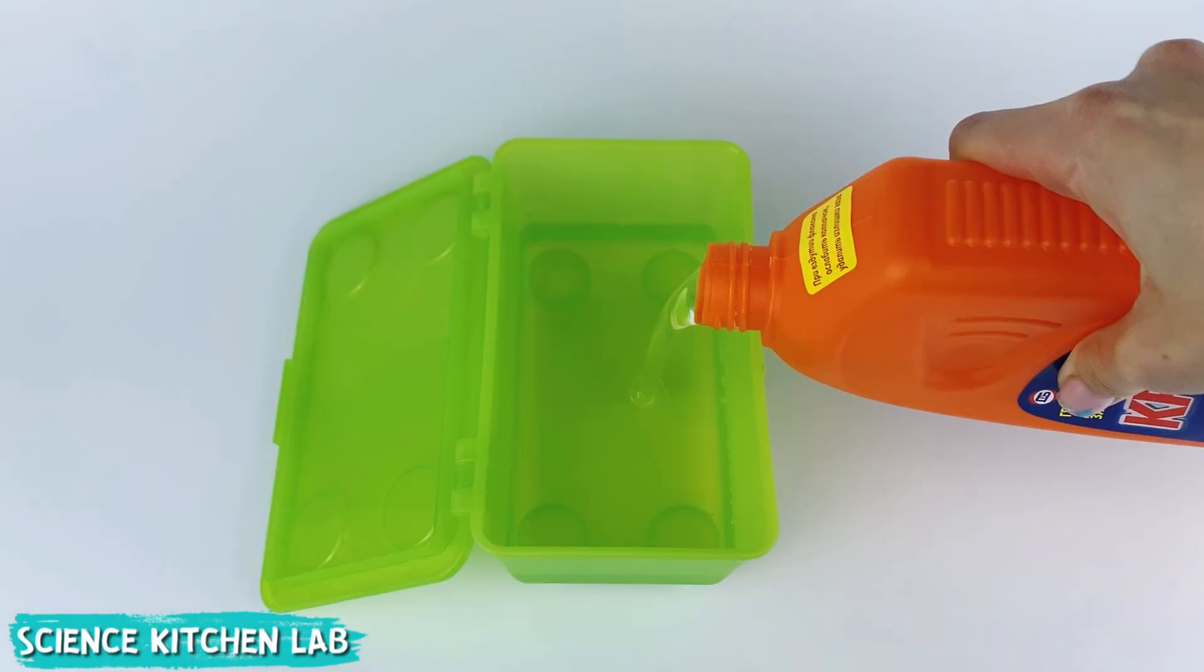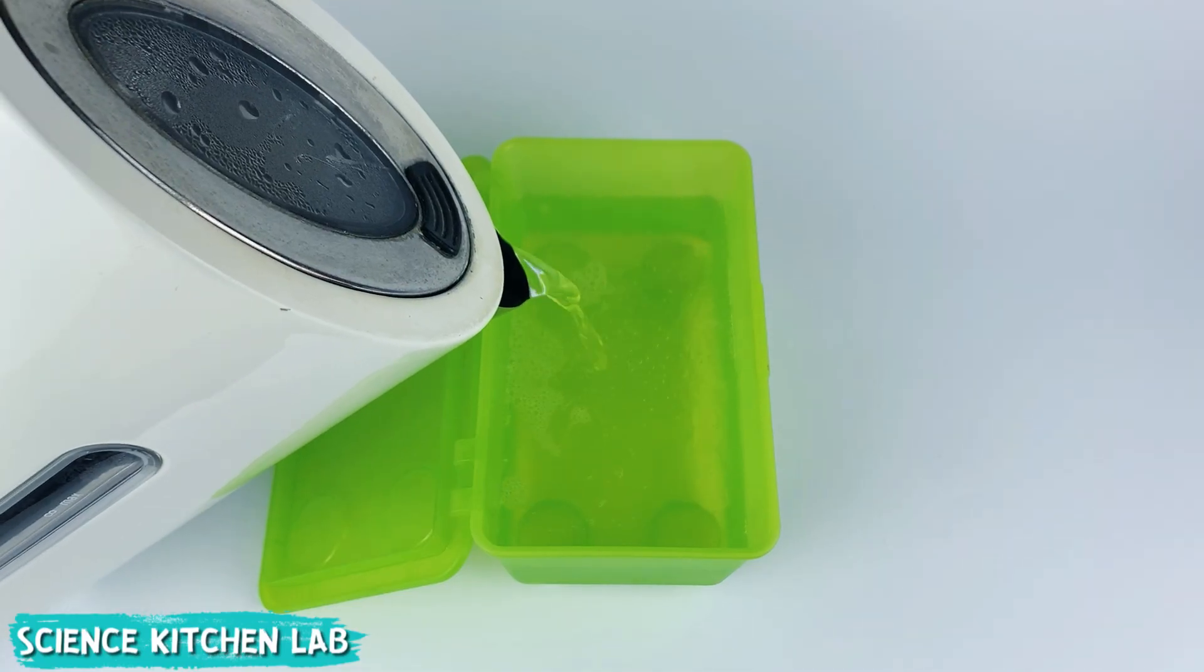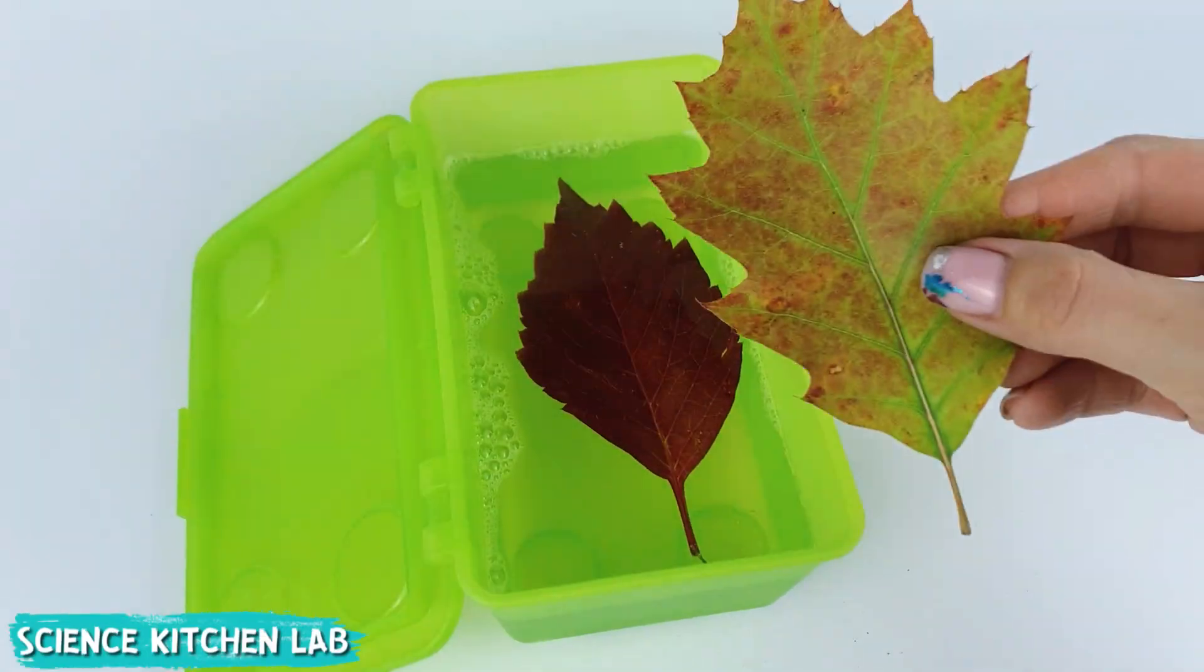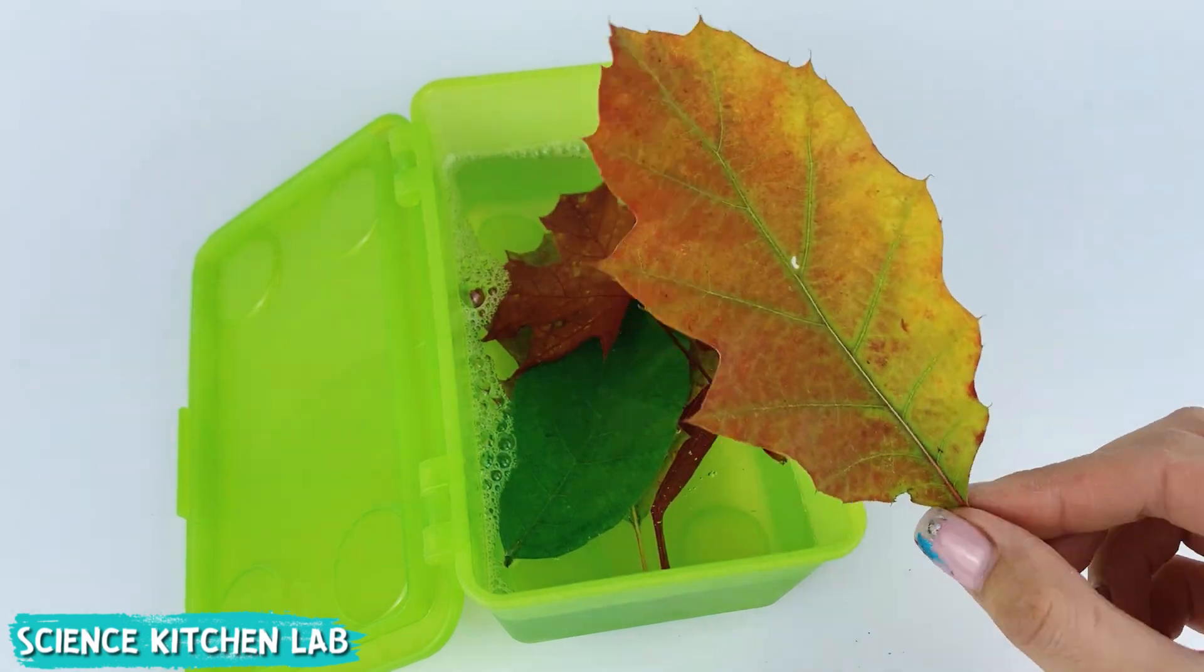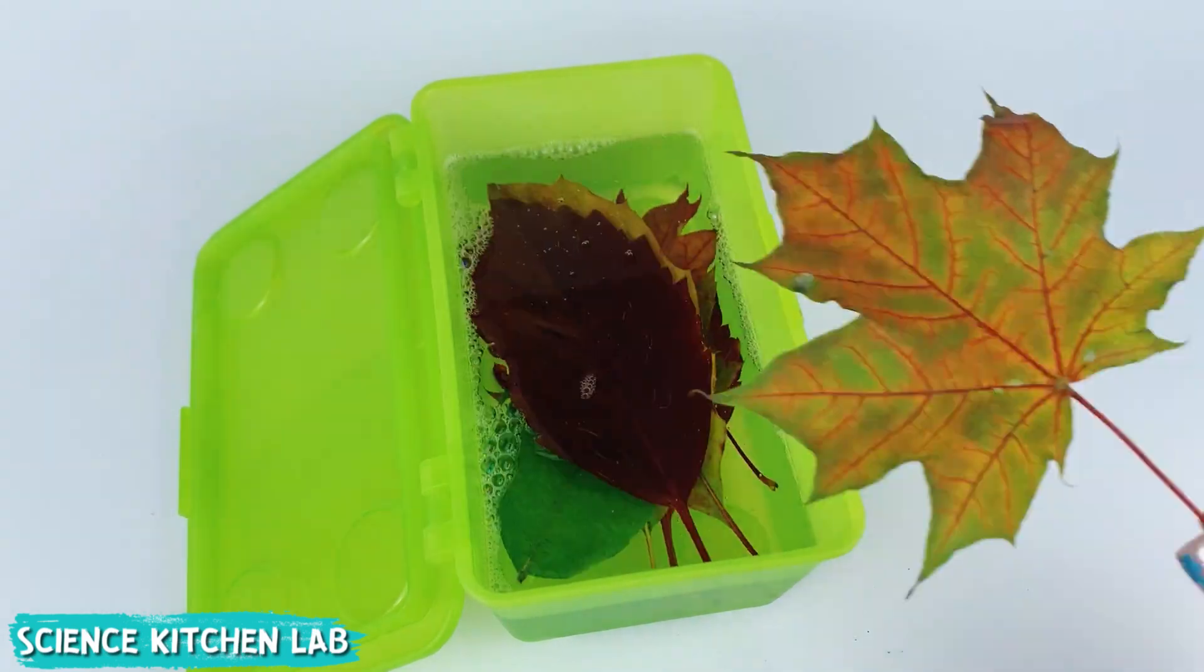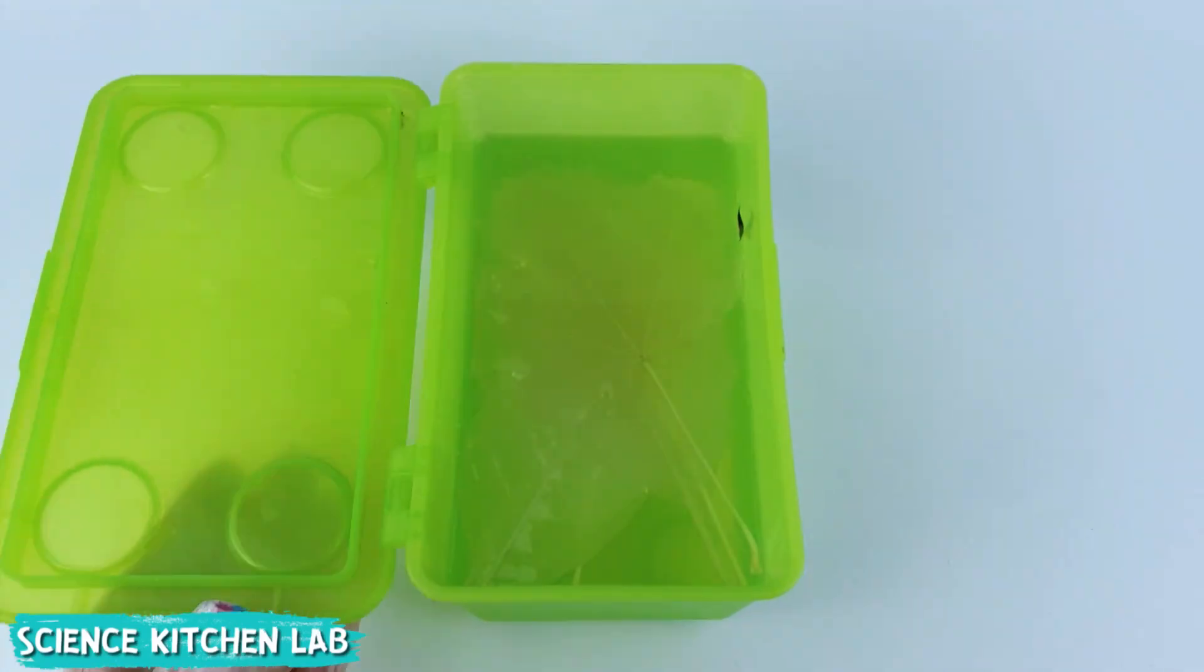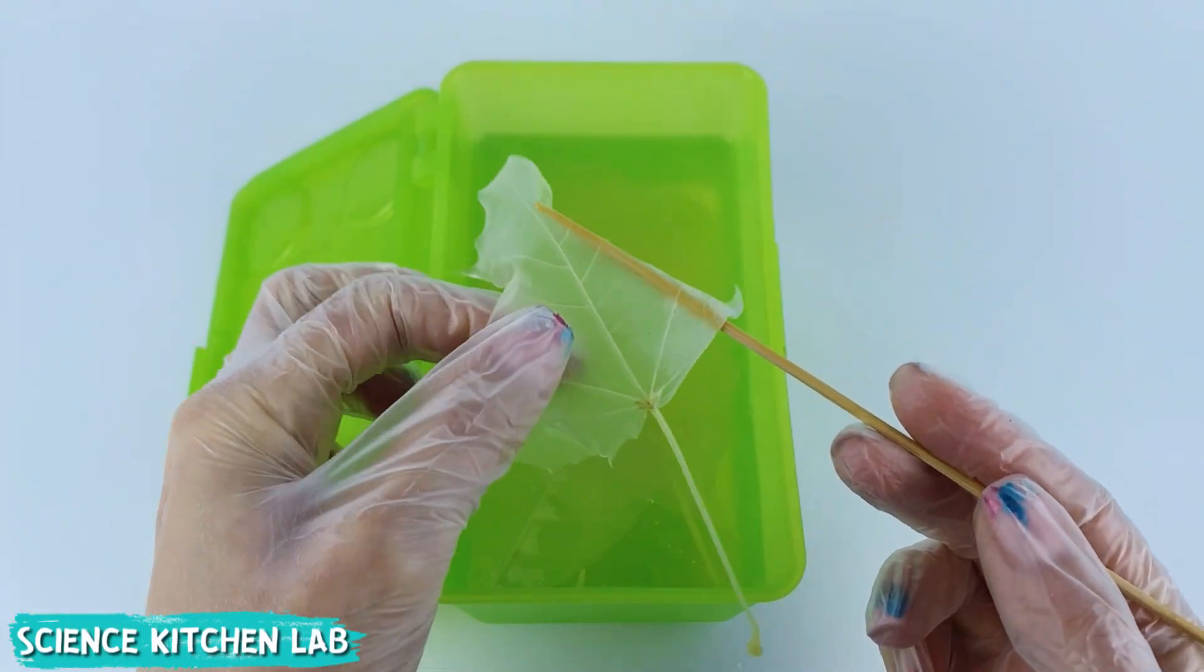Pour liquid drain cleaner and boiling water into a container in a one-to-one ratio. Collect autumn leaves of different shapes and put them into the solution. Seal the container tightly and after three days carefully remove the leaves and rinse them. Then the leaves need to be dried a little.